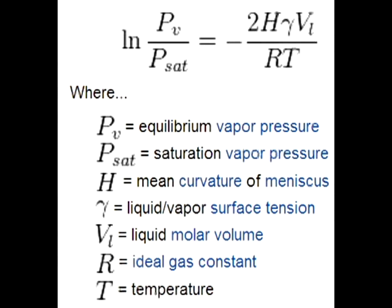In a capillary system, all the variables in the Kelvin equation are constant except for PV, the equilibrium vapor pressure, and H, the mean curvature of the meniscus. Therefore, the factors affecting capillary condensation are PV and H.